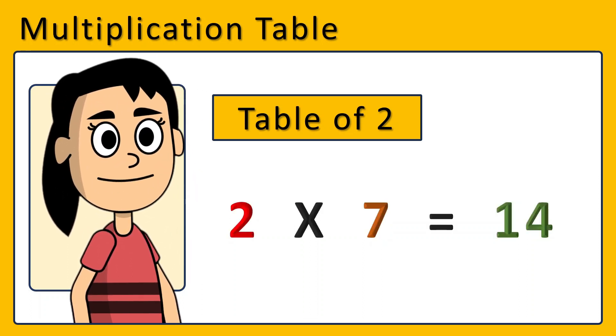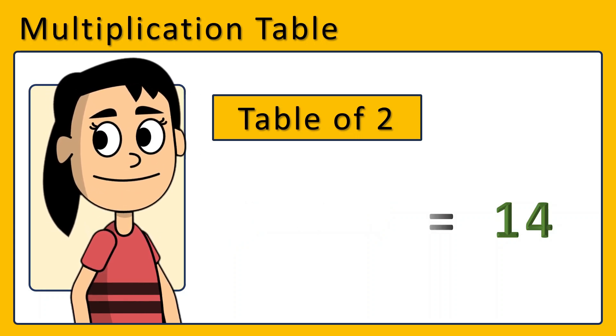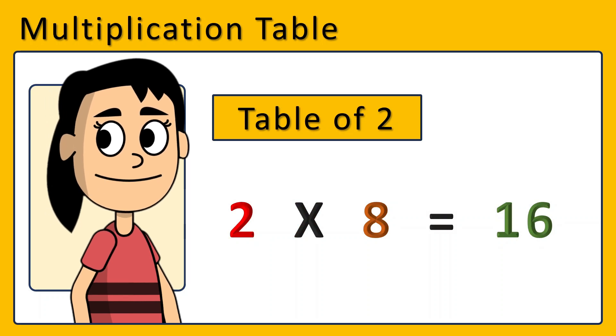2 times 7 are 14. 2 times 7 are 14. 2 times 8 are 16. 2 times 8 are 16.